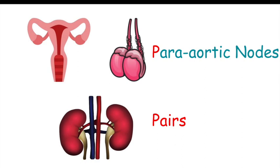The second exception is that the posterior calf and the dorsolateral foot are drained by the popliteal lymph nodes. So to summarize: everything below the umbilicus drains into the superficial inguinal lymph nodes, except the pairs (testes, ovaries, kidneys) which drain into the para-aortic nodes, and the posterior calf and dorsolateral foot which drain into the popliteal lymph nodes.